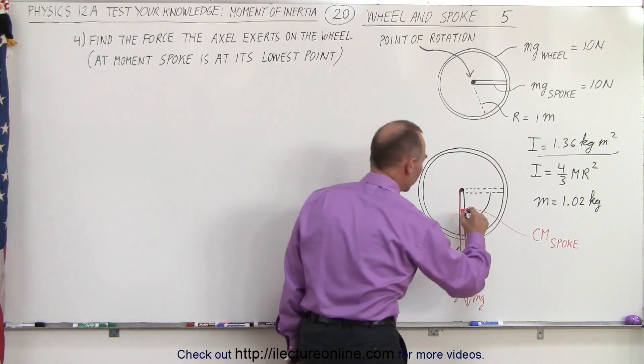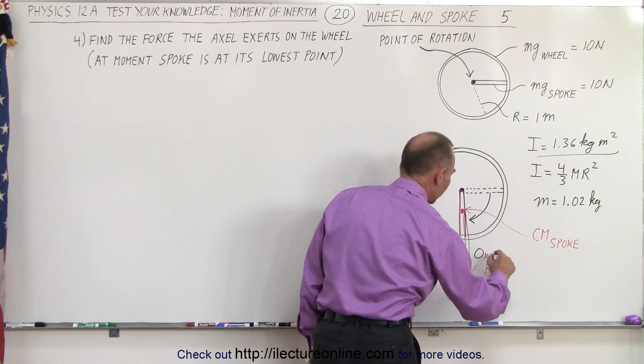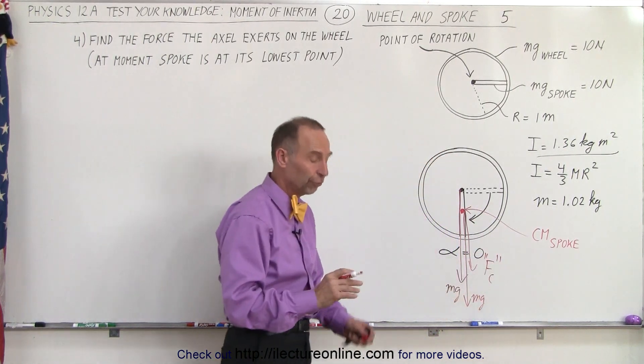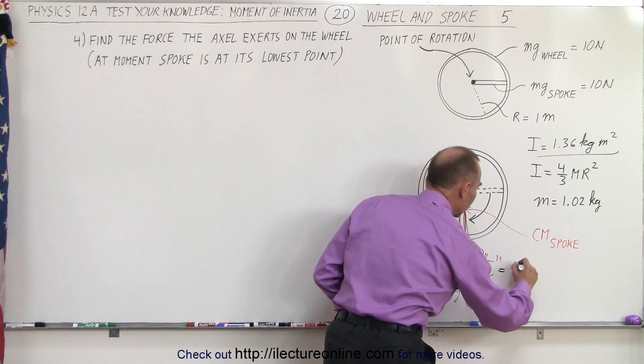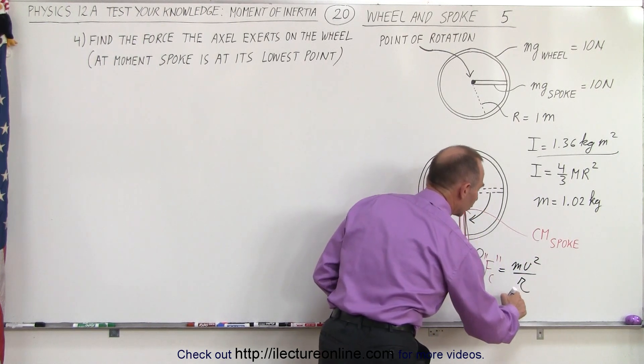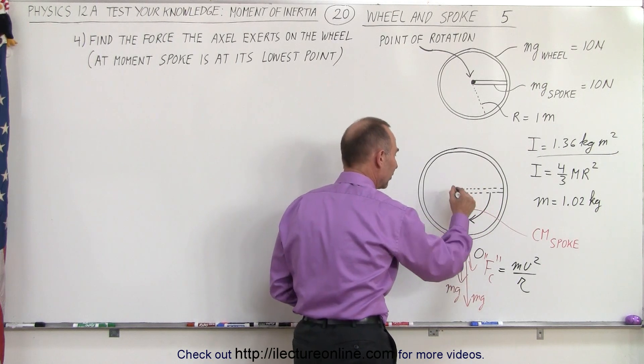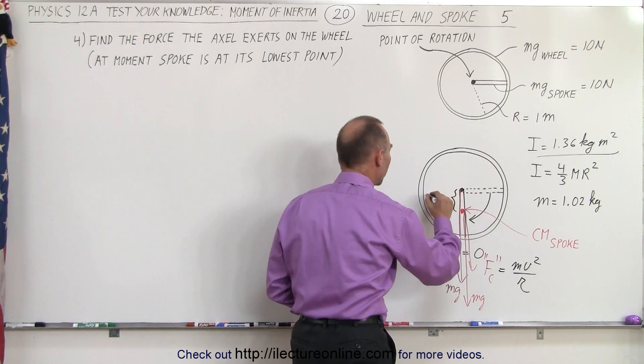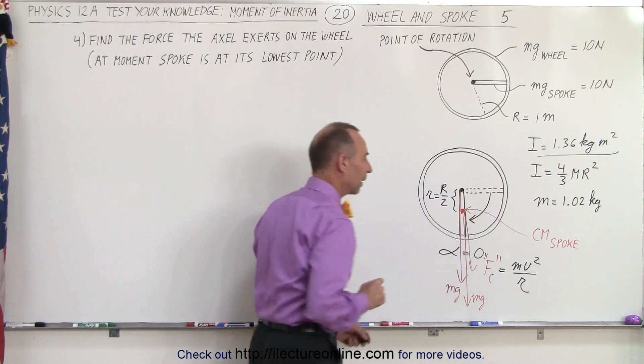Therefore, the spoke is also going to experience a centripetal force, F sub C. The centrifugal force, by definition, is equal to mv squared over r. We're going to call it a small r because it's the distance to the center of mass, so this would be your small r, which is equal to the radius of the spoke divided by 2.